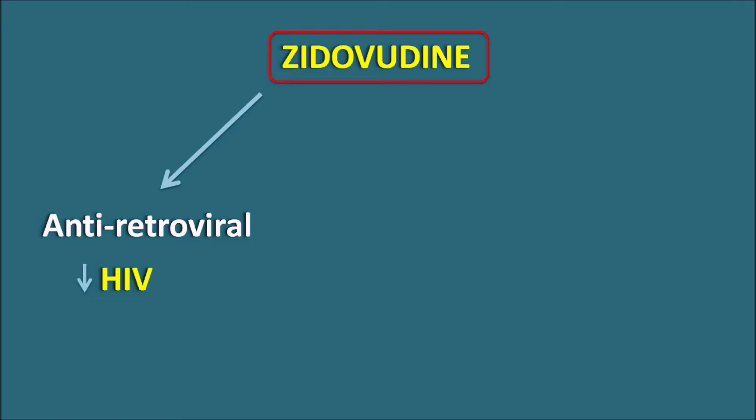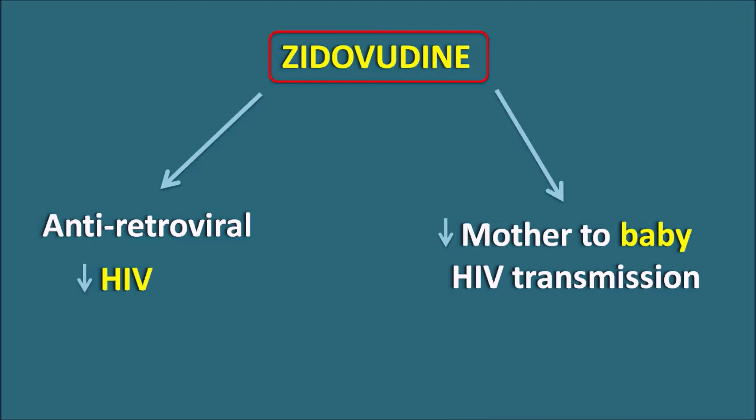Zidovudine is a drug commonly known as an anti-retroviral agent because this drug decreases the HIV infection, which is a retrovirus. The mechanism of the drug is related to the inhibition of the reverse transcriptase enzyme activity. At the same time, this drug can also be used to prevent HIV transmission from mother to baby — that is, maternal to neonatal HIV transmission.